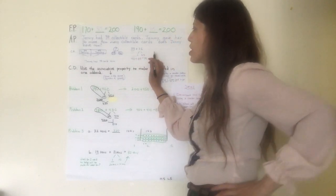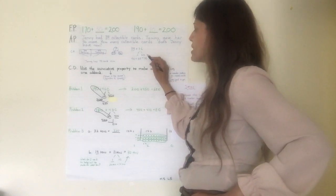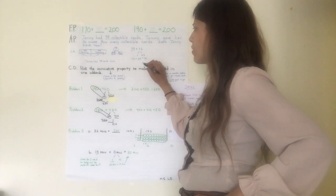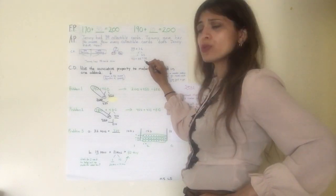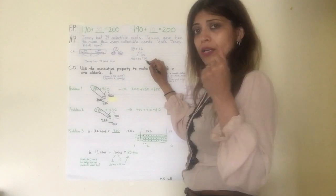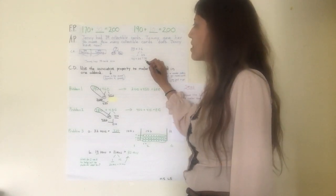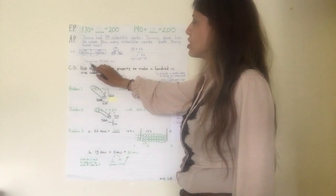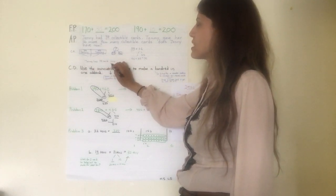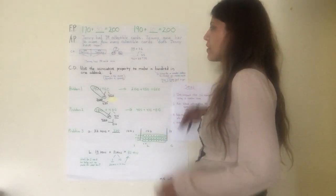Awesome job. The reason I did it this way was because when you use the next 10 method using a number bond, it helps you solve math problems quicker. It helps you use mental math — that's the goal. We have to use the right strategy: read, draw, write. So Jenny has 75 cards now in total.